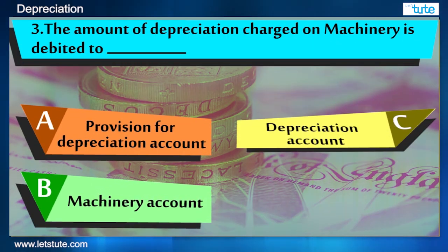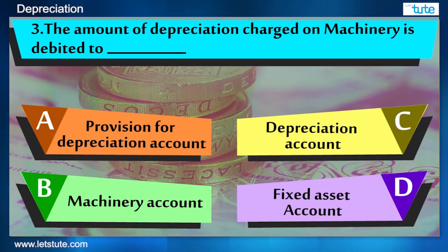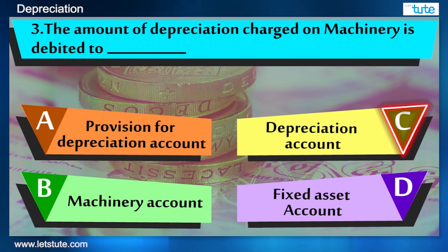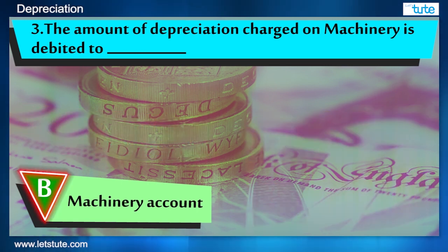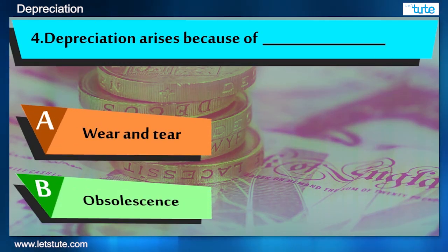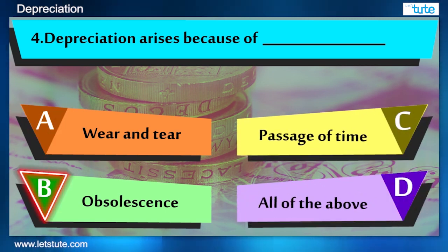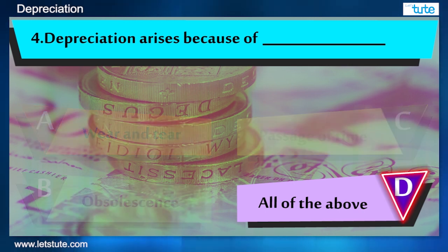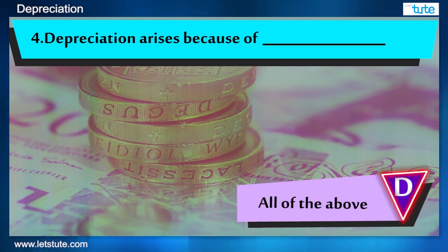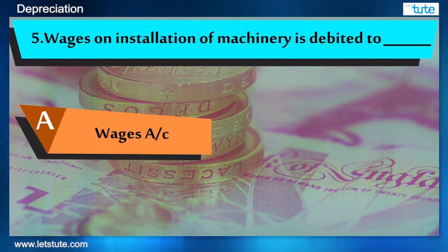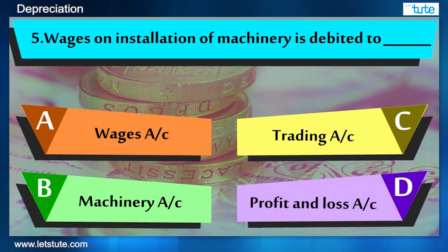The amount of depreciation charged on machinery is debited to? Depreciation arises because of? Wages on installation of machinery is debited to?